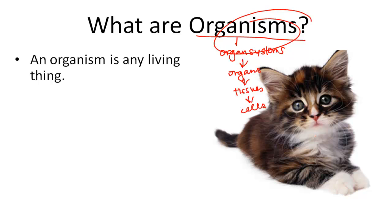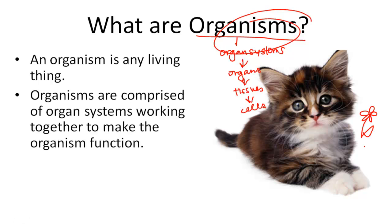This cute kitty is an organism, but so is a daisy that might be growing in your front yard. Organisms are comprised of organ systems working together to make the organism function. So this kitty cat might have the circulatory system like we were talking about earlier, but then will also have a nervous system that goes through her body and might also have a muscular system that helps her to move.